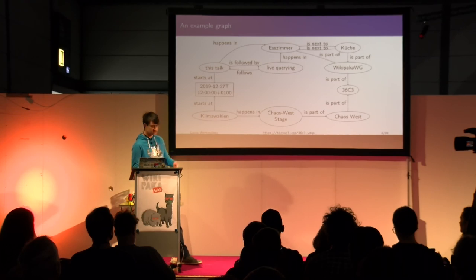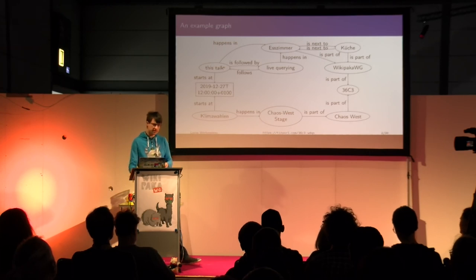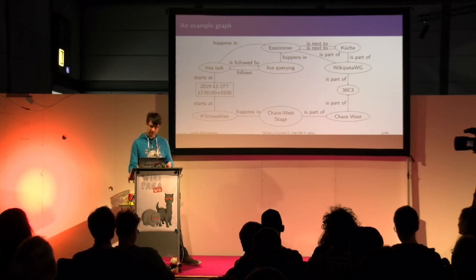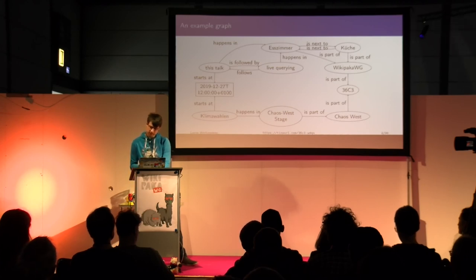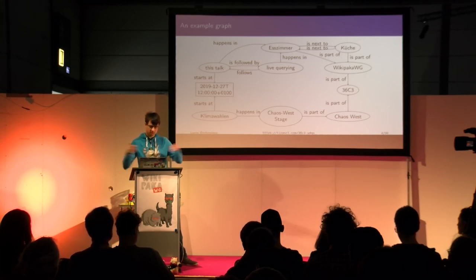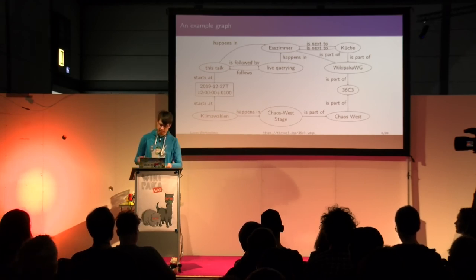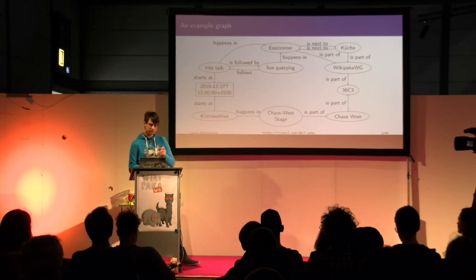This graph has a few important properties. For example, there are some redundant connections — if this talk is followed by live querying, you don't really need to know that live querying follows this talk. It's redundant, but it doesn't hurt and often makes your life easier. If one half of the connection is missing, you can still investigate what's going on. We also have a bidirectional connection: S-Cimer is next to the kitchen and the kitchen is next to S-Cimer, but these are two separate arrows. The data model is: subject, predicate, object — that's everything.